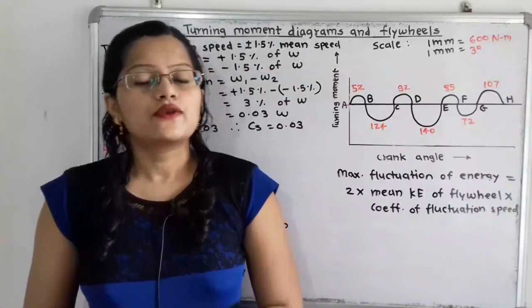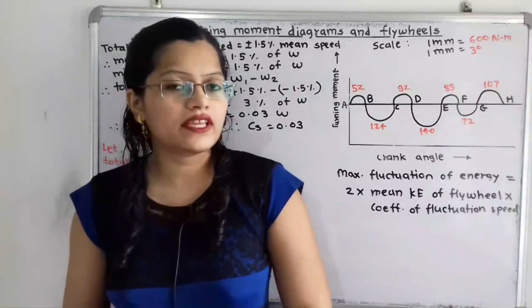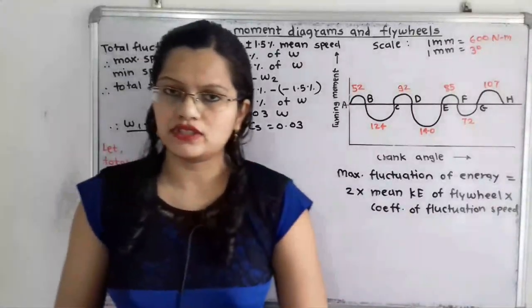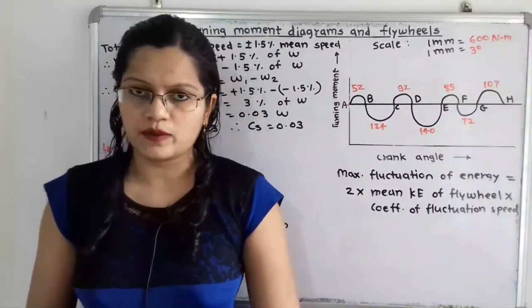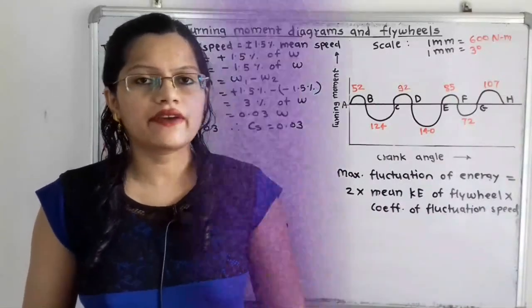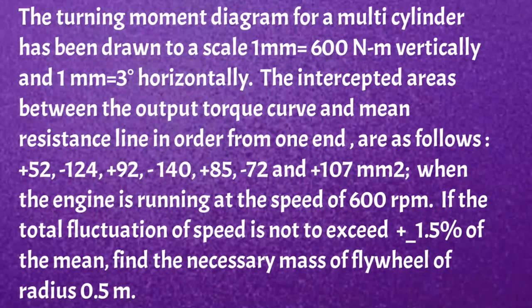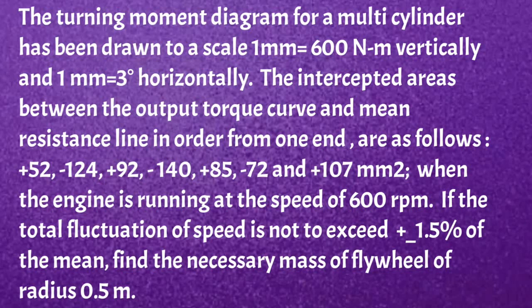Hello friends, this is Priyanka. Today we are going to solve a problem on turning moment diagrams and flywheel for a multi-cylinder engine. In this video we are going to use simple basic formulas instead of complicated ones. The turning moment diagram for a multi-cylinder engine has been drawn to a scale: 1 mm = 600 Newton-meter vertically and 1 mm = 3 degrees horizontally. The intercepted areas between output torque and the mean resistance line, taken in order from one end, are: +52, −124, +92, −140, +85, −72.